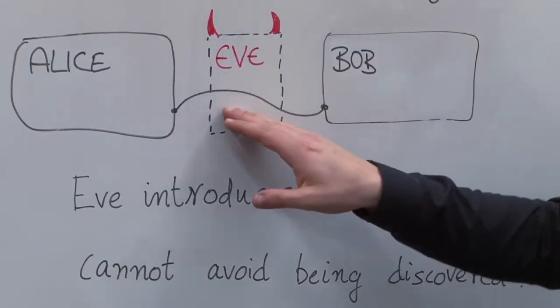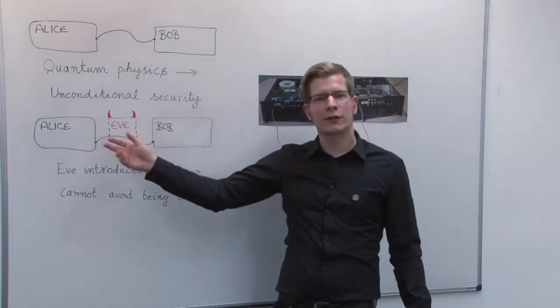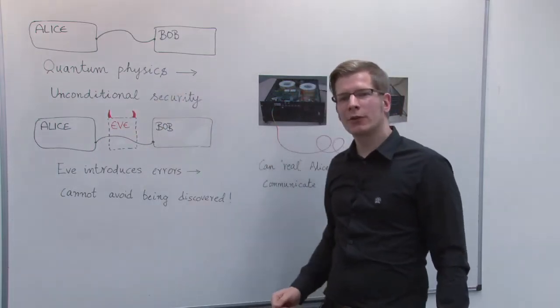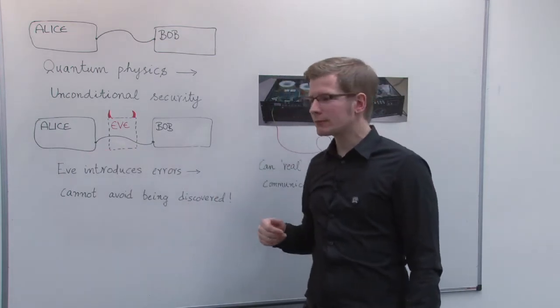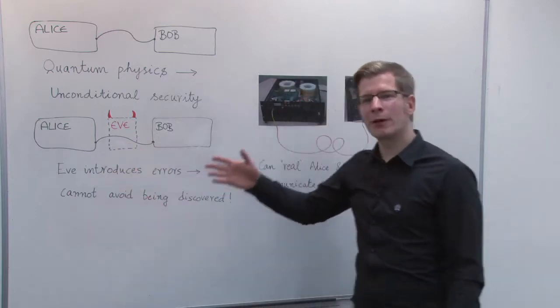An adversary Eve cannot eavesdrop on the communication of Alice and Bob because she will introduce errors and is therefore detected. A security proof for such a scenario requires certain model assumptions for the devices of Alice and Bob. This works fine in theory, but what about in practice?